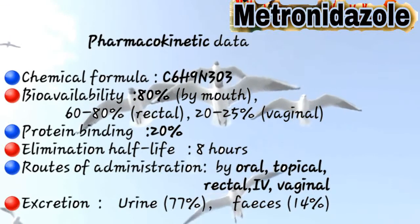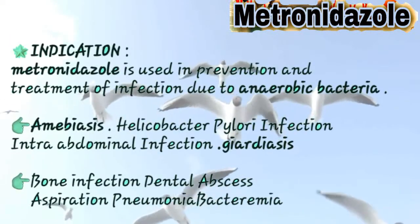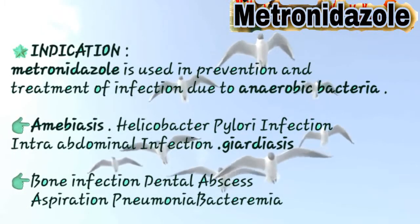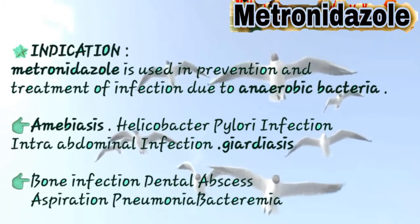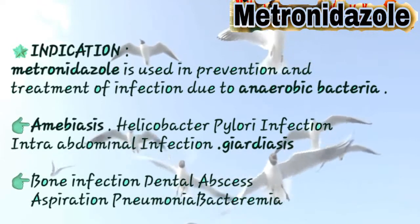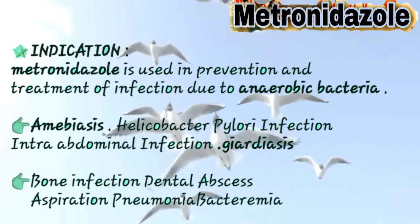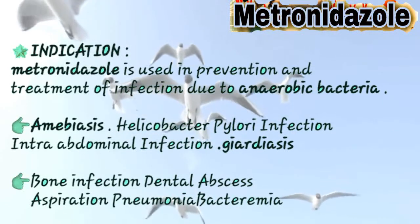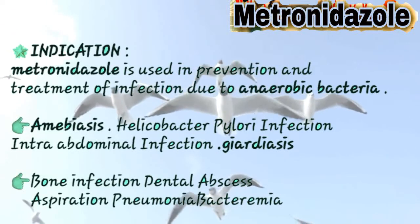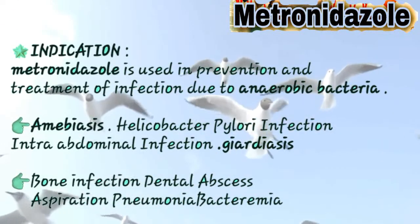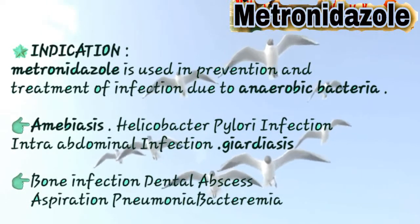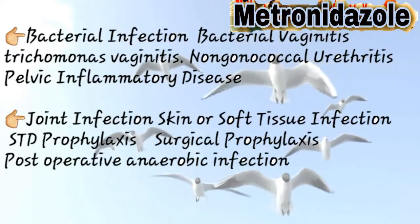Indications are the conditions where a doctor prescribes metronidazole. It is used in the prevention and treatment of infections due to anaerobic bacteria — bacteria that can live without oxygen. The first indications include amoebiasis, H. pylori infection, intra-abdominal infection, giardiasis, bone infection, dental abscess, pneumonia, and bacteremia.